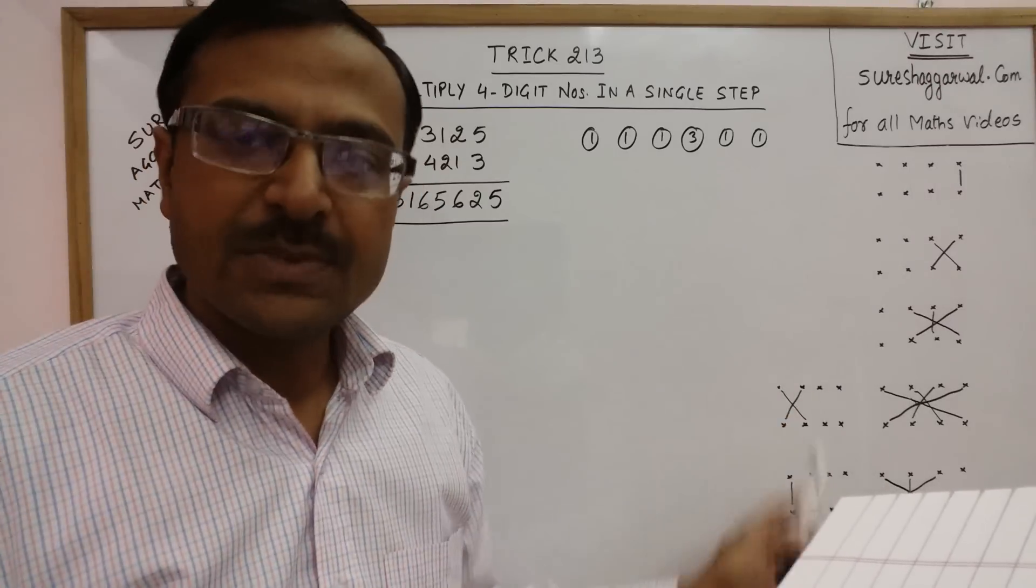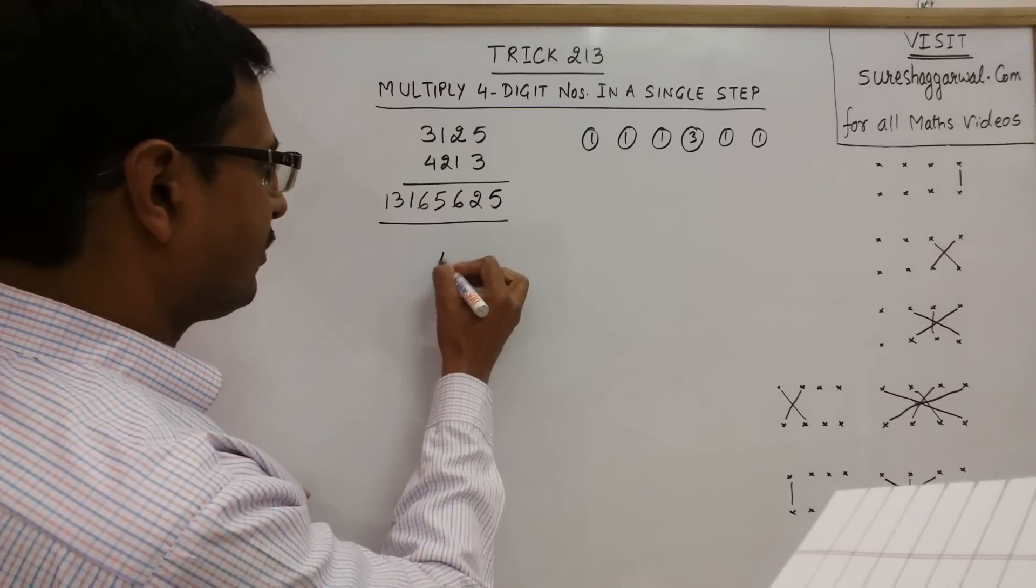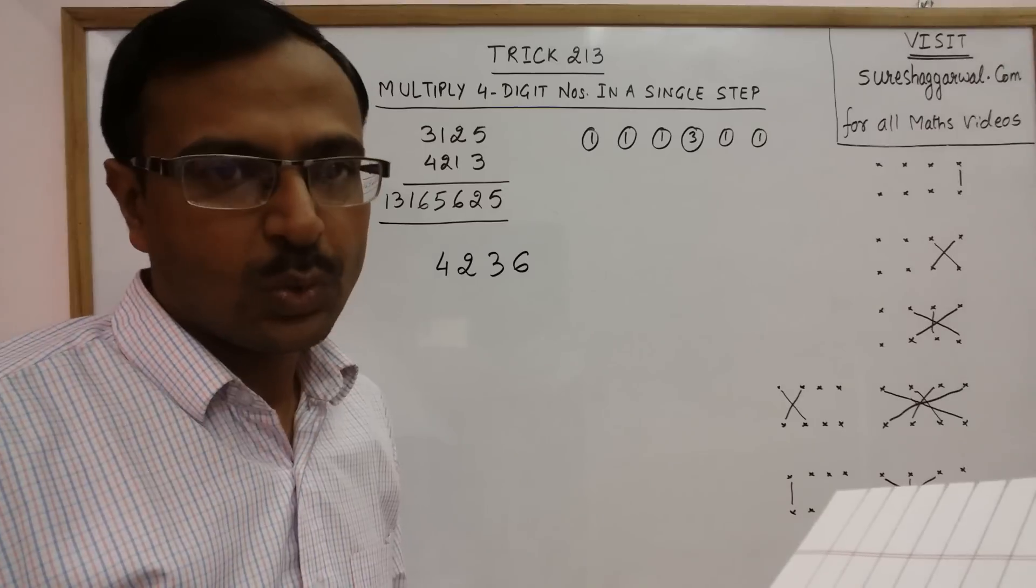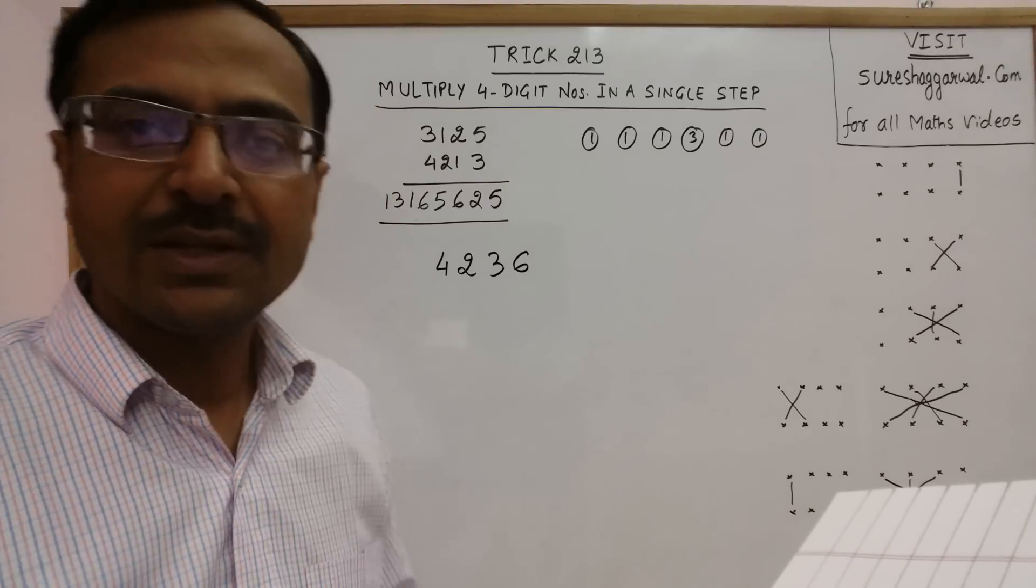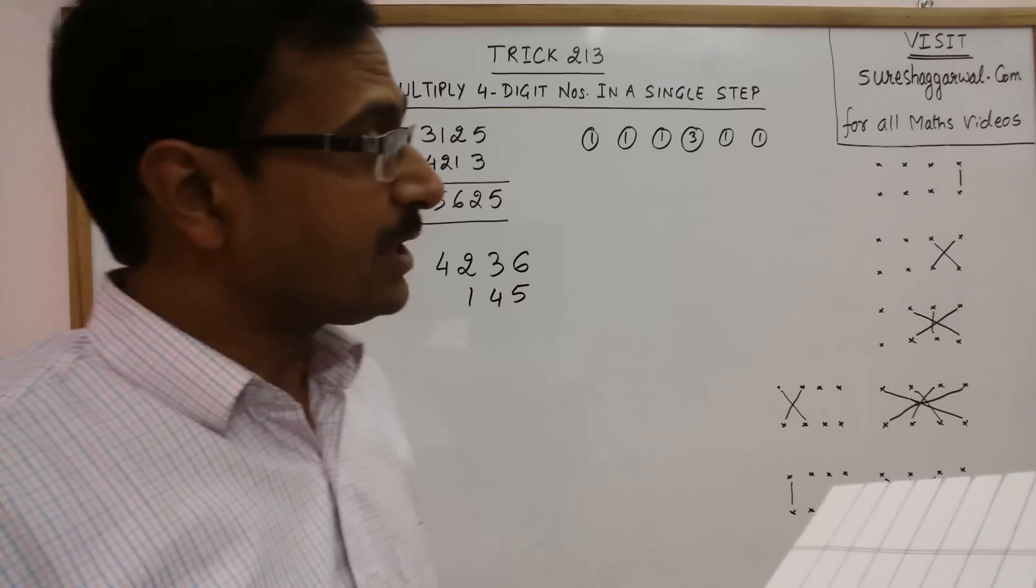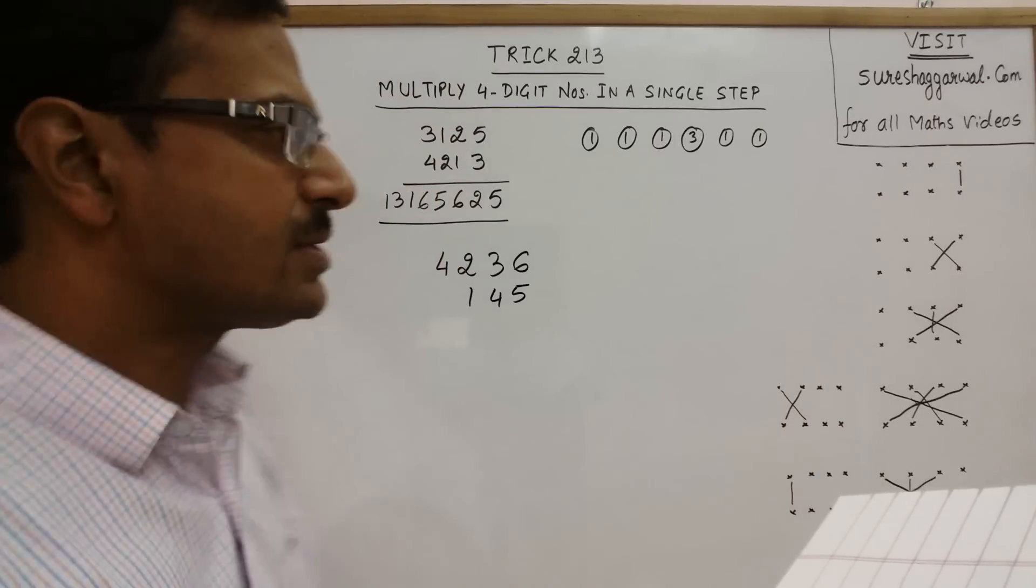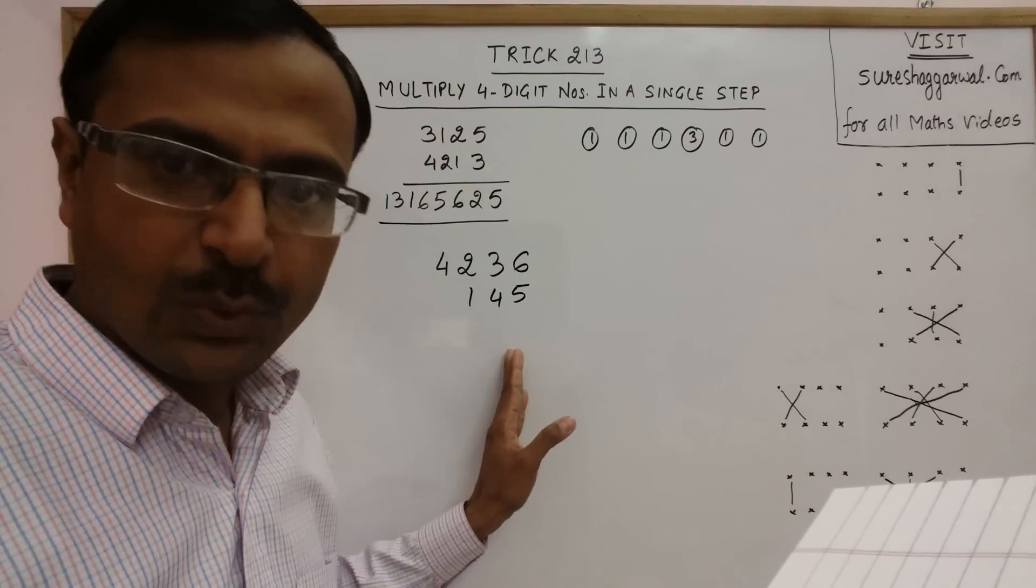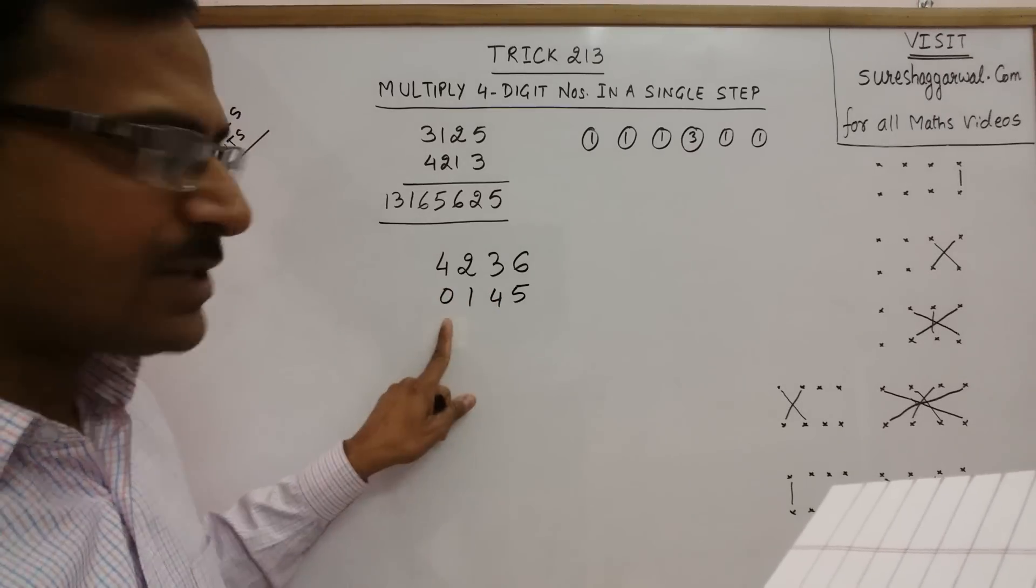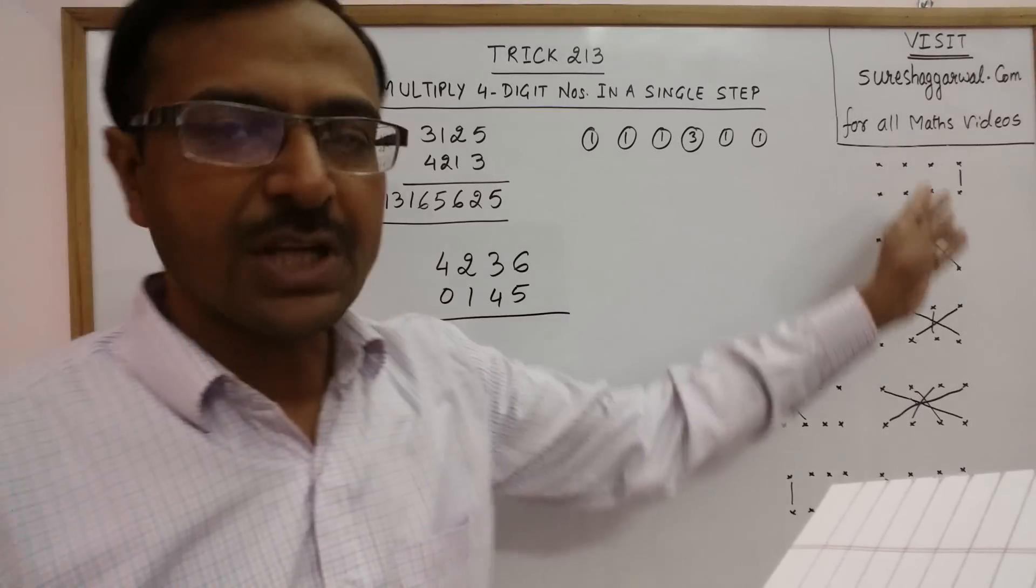Now, after having understood the steps of multiplication of 4-digit numbers, let us practice this using one more example. Suppose we have the first number as 4,236 and the second number now is a 3-digit number, suppose I take 145. The same method can be used for multiplying 4-digit numbers by 3-digit numbers also, because any 3-digit number can be converted into a 4-digit number using a 0. Just put a 0 to equalize the number of digits and now carry on with the same method which I told you just now.